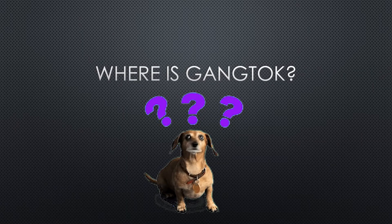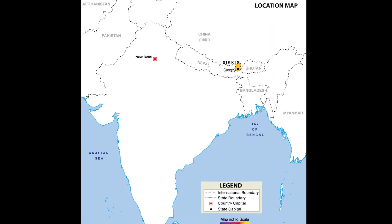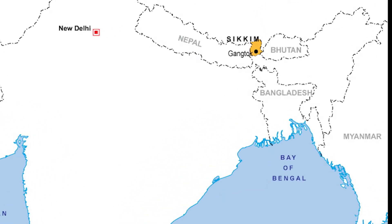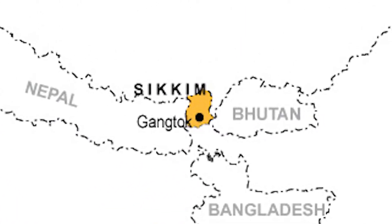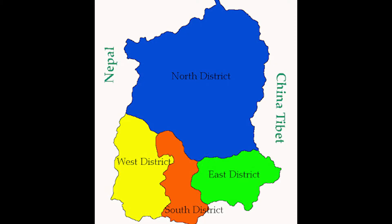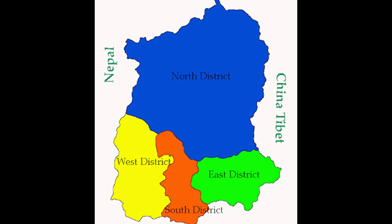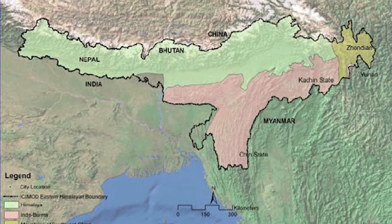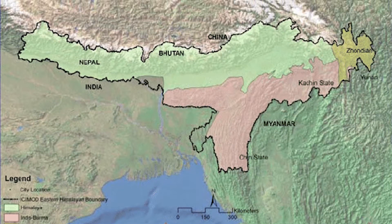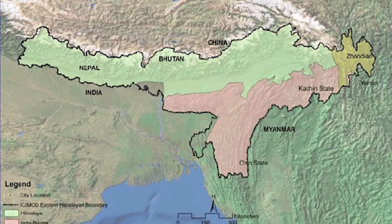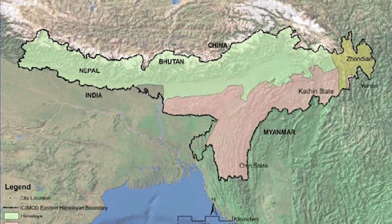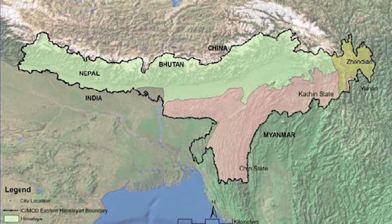So where is Gangtok? Gangtok is the capital of the northeastern state of India called Sikkim. It is also the headquarters of the eastern district of Sikkim. It is situated in the eastern Himalayan range at an altitude of 5,410 feet from sea level.